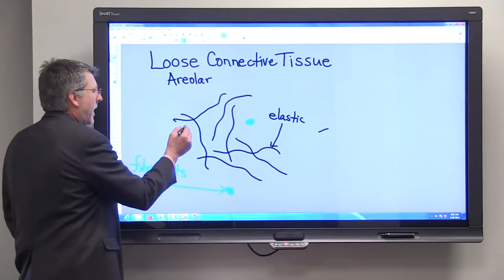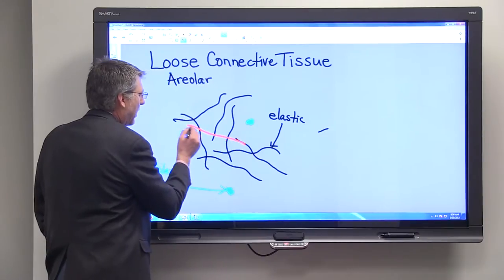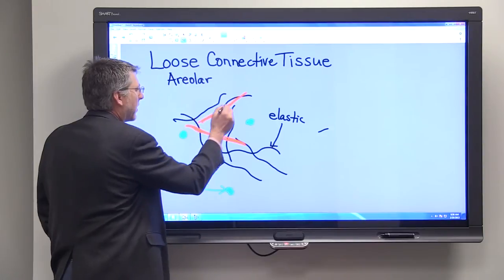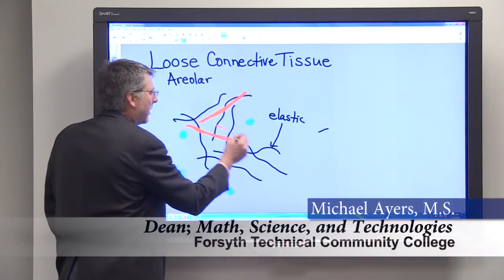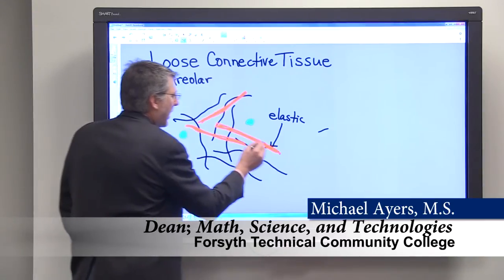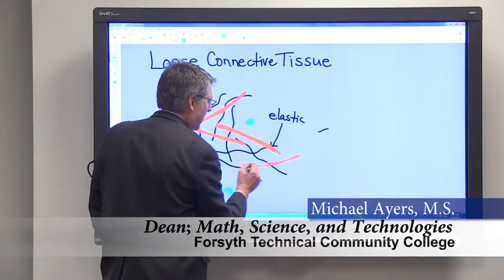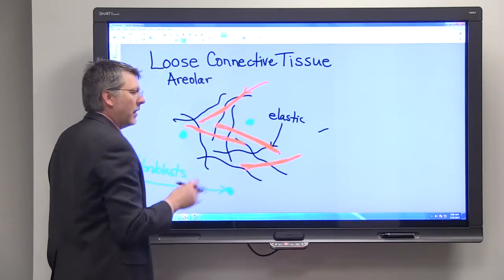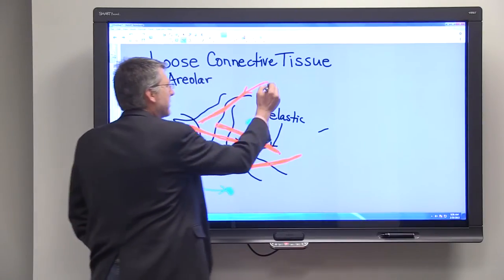The other thing that the fibroblasts secrete are collagenous fibers. The collagenous fibers are the tough fibers and they're much thicker and they're made of a substance called collagen. Now all these fibers are suspended in this liquid ground substance.